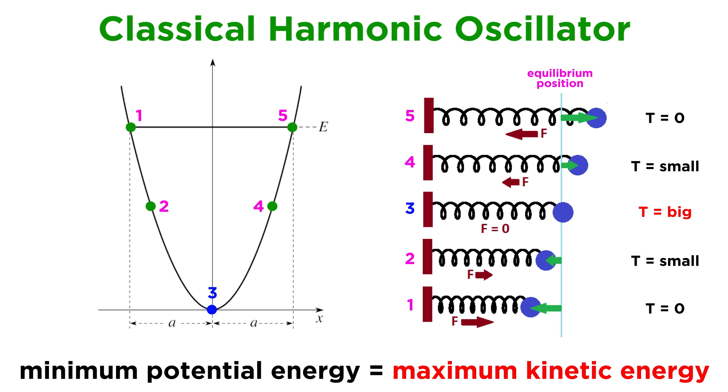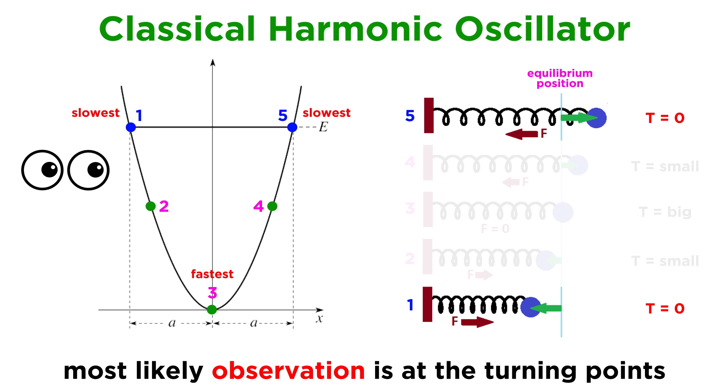So at x equals zero, kinetic energy T is at its maximum, and therefore so is the particle's velocity. By contrast, at x equals plus or minus x, or the boundaries, the particle will possess its maximum potential energy, and will for an instant be at rest. Because the particle travels more quickly in the middle and more slowly at the boundaries, if we make random observations as time progresses, the most likely observations occur at the turning points, statistically speaking.